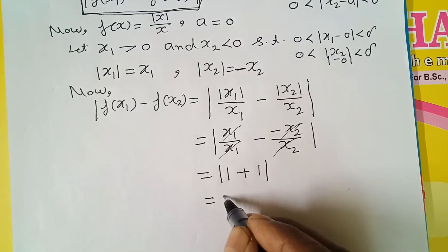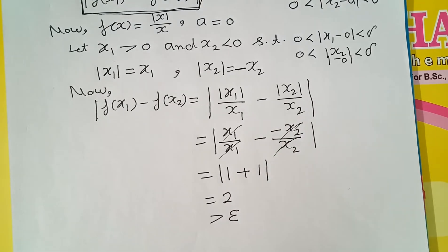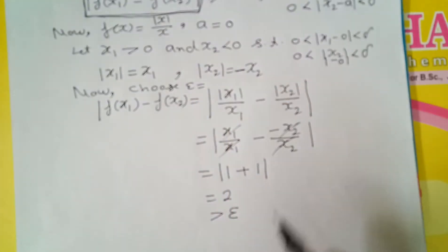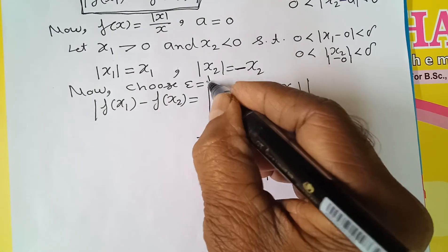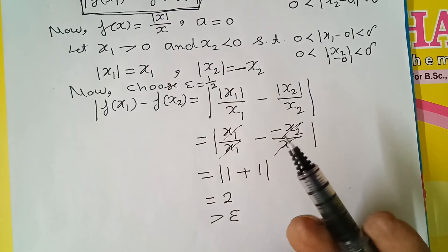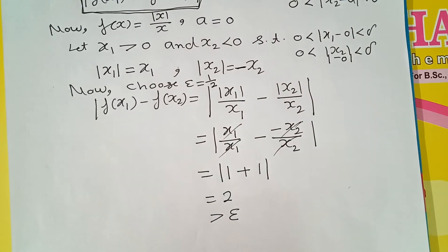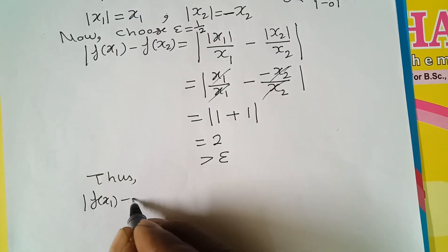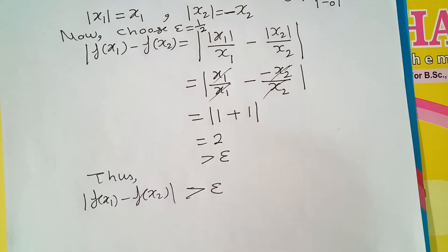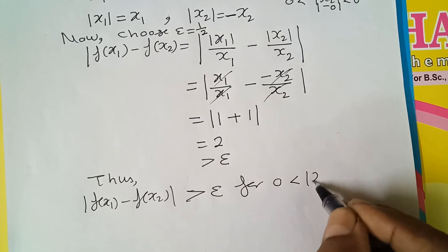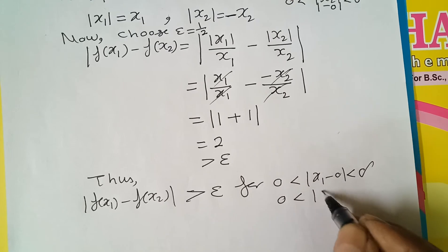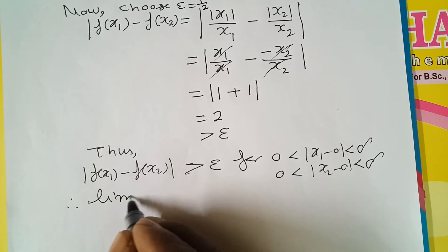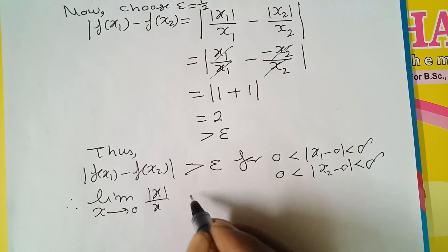ये आपका 2 आ गया — 1 minus (-1) = 2। And 2 is definitely greater than epsilon, क्योंकि epsilon is as small as we want. So here we choose epsilon such that 2 greater than epsilon — epsilon की value आप half, 1/4, या 1/3 कुछ भी ले सकते हूँ। इस तरह से हमने mod f(x1) minus f(x2) greater than epsilon ला दिया, for 0 less than mod x1 minus 0 less than delta and 0 less than mod x2 minus 0 less than delta। और इसलिए हम कह सकते हैं कि limit x tends to 0, mod x by x does not exist।